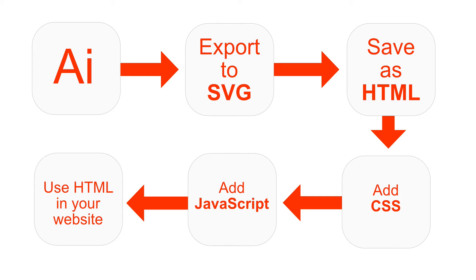What I'm going to do is show you how to create a simple interactive activity using Adobe Illustrator to create an SVG file, and from the SVG file we will then add some JavaScript, we'll add some CSS and make it interactive, and then you can use that HTML inside your course content.